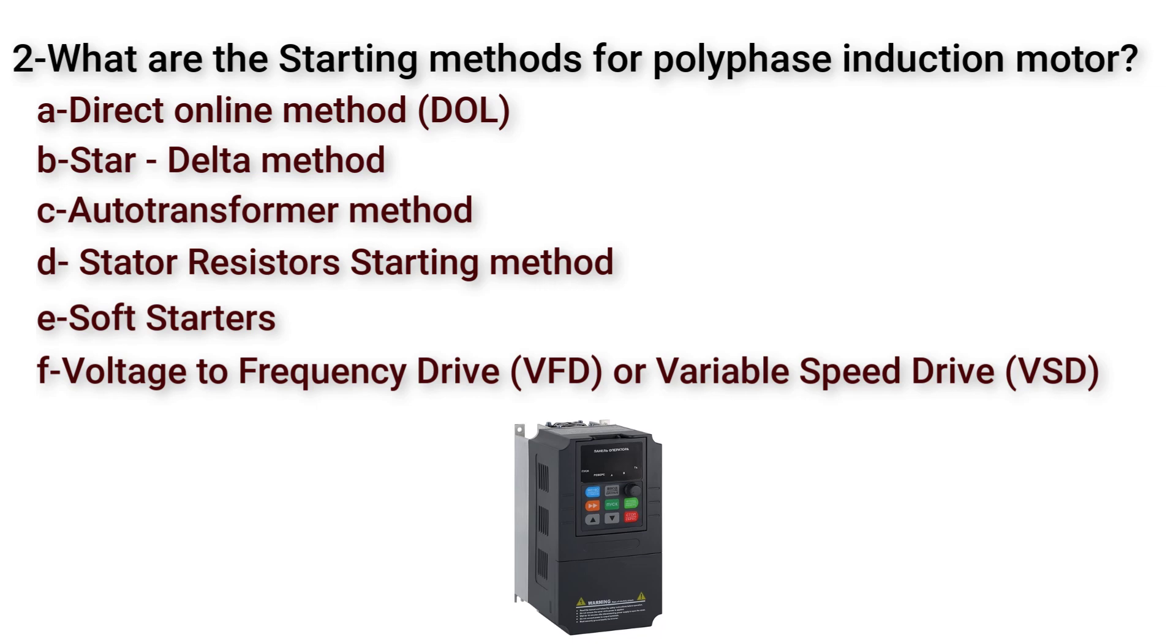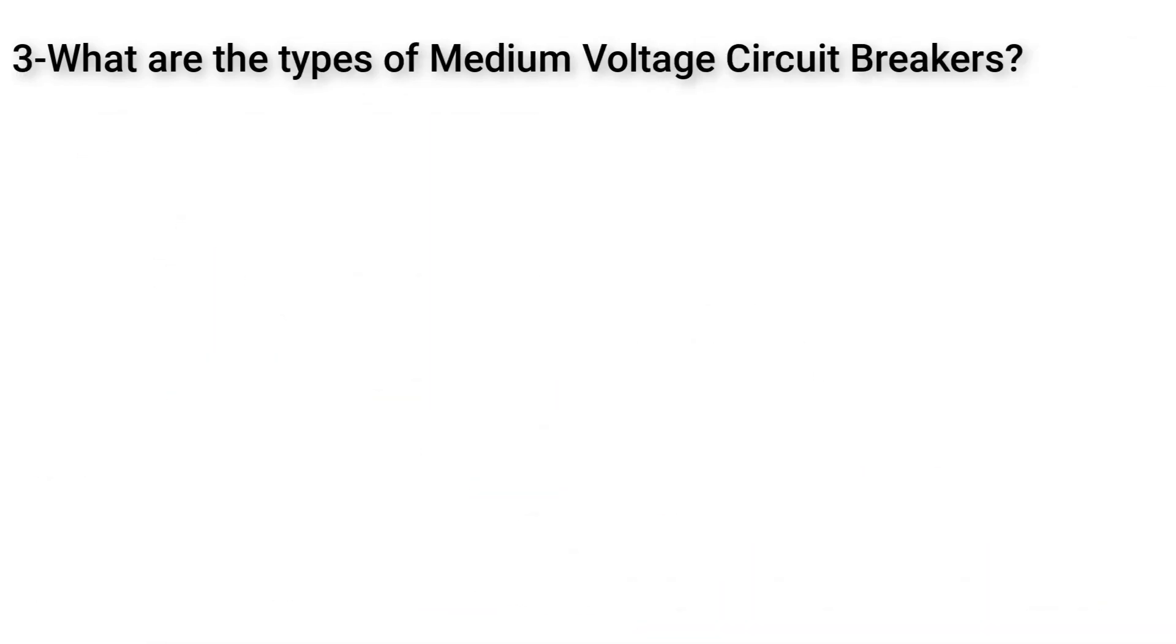This drive decreases the voltage at starting to decrease the inrush current. The third question here is what are the types of medium voltage circuit breakers?